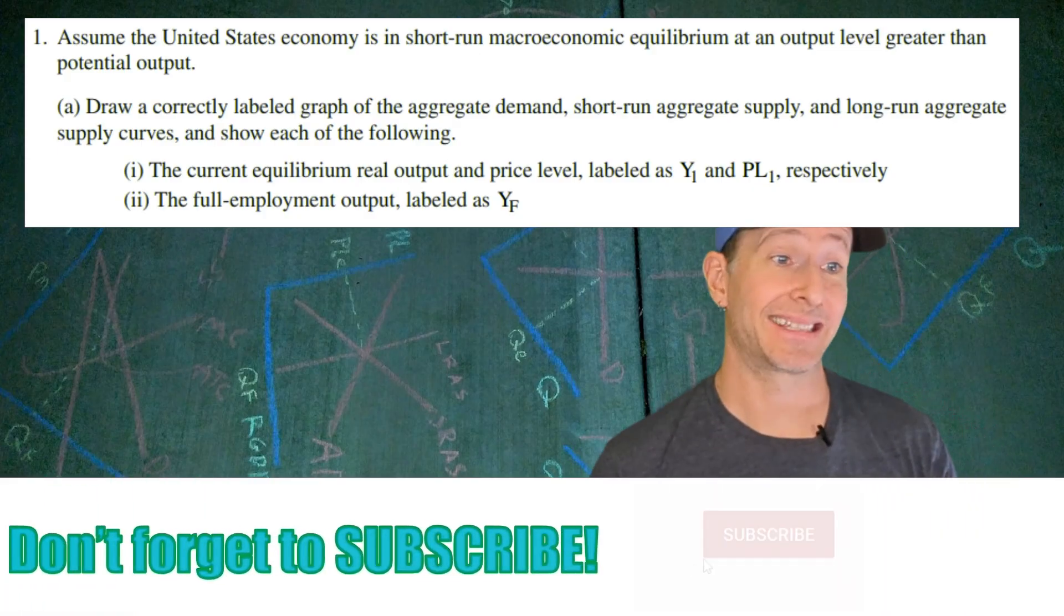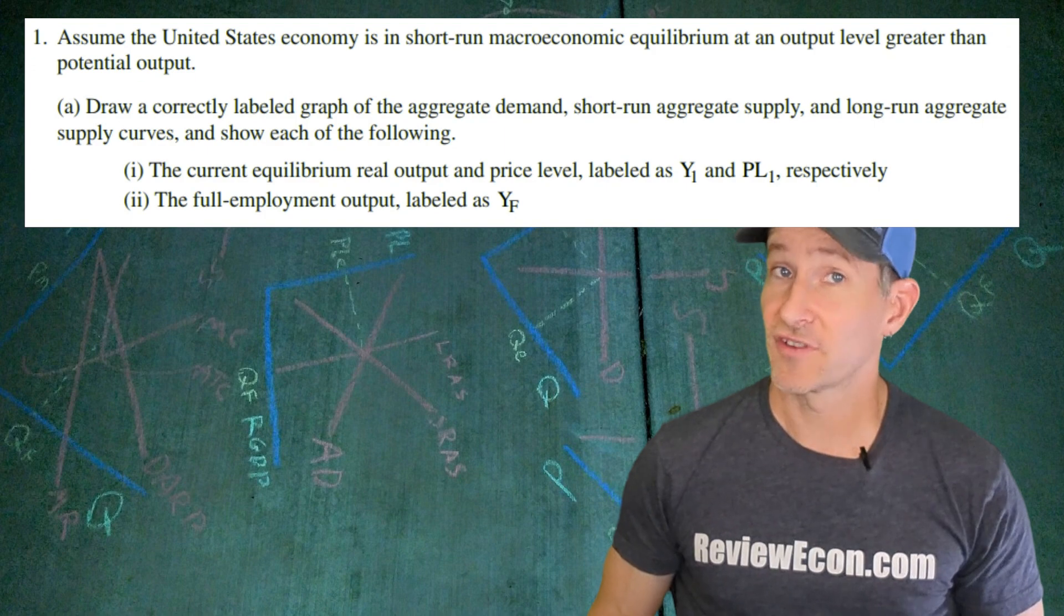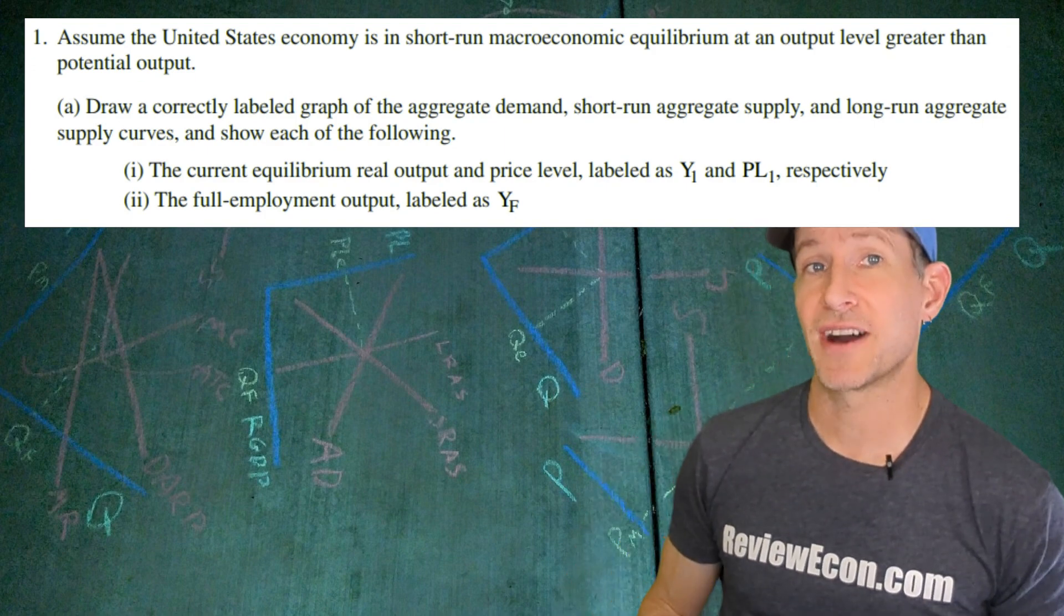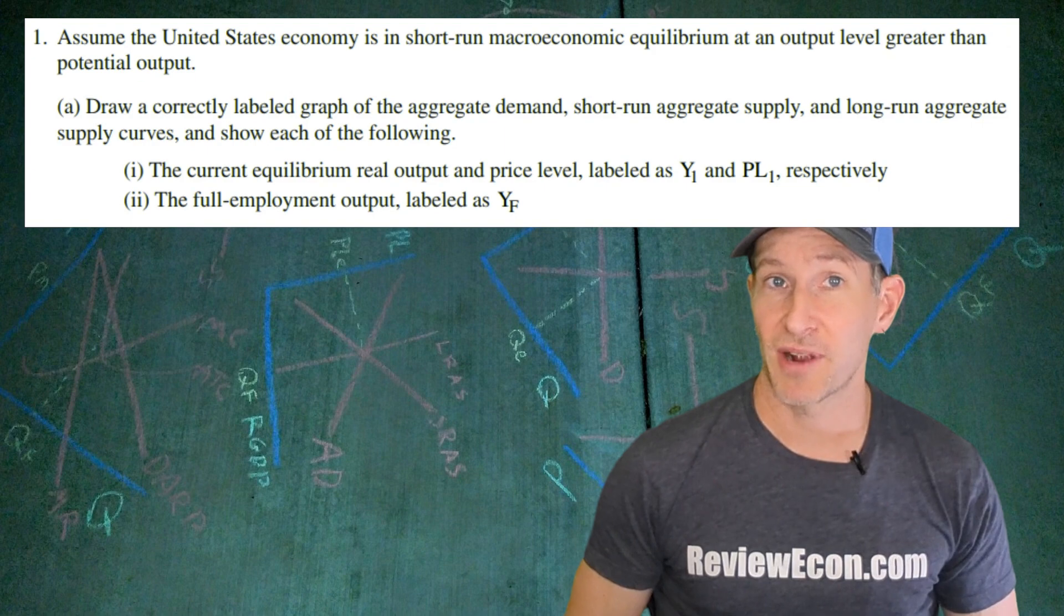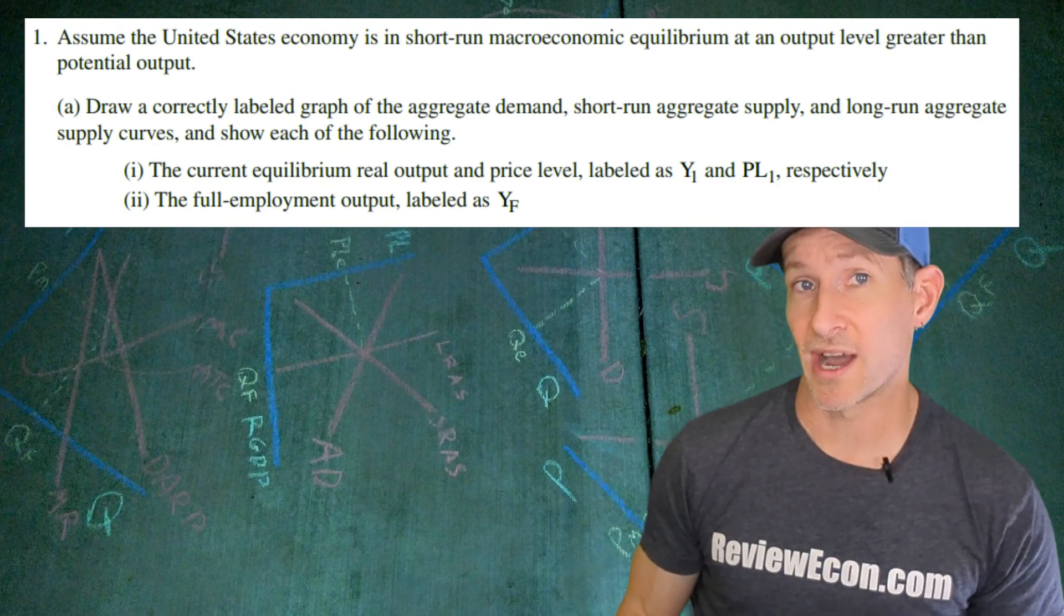This question is all about the United States and we're going to assume that the United States is currently in short-run equilibrium and we have an output level that is greater than the potential output. First thing we need to do is draw the ASAD graph and we're going to label the current level of output Y1 and the current price level PL1. We're also going to label the full employment output labeled YF.